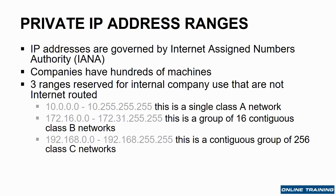You could also use 172.16 through 172.31 — a group of 16 contiguous Class B networks, which obviously gives a smaller number of possible IP addresses. Or 192.168 through 192.168.255 — a contiguous group of 256 Class C networks. Depending on how many machines you have, this defines the total IP space available to your company.